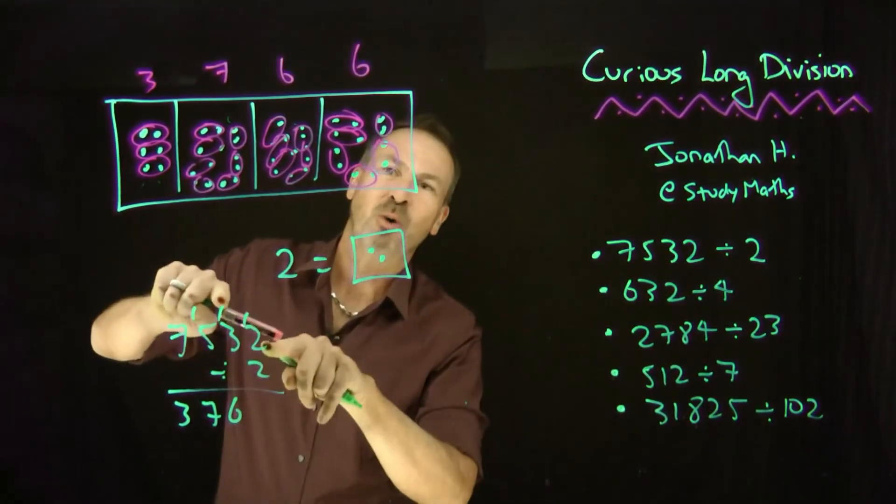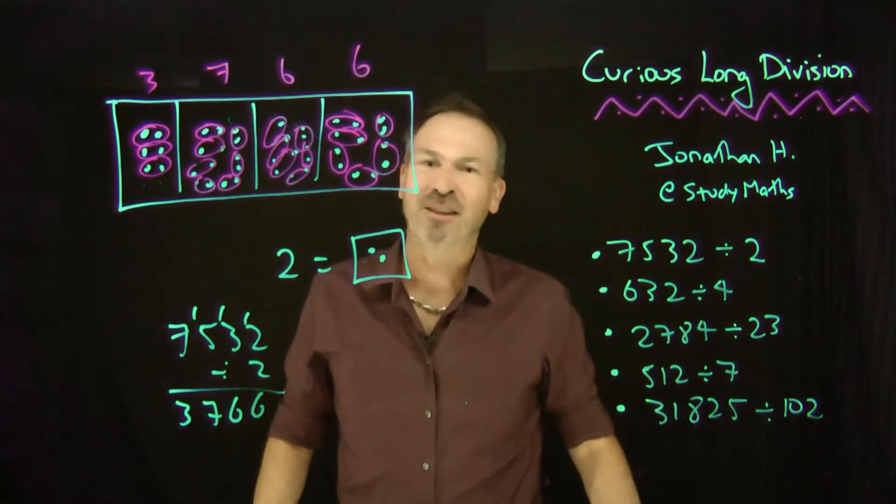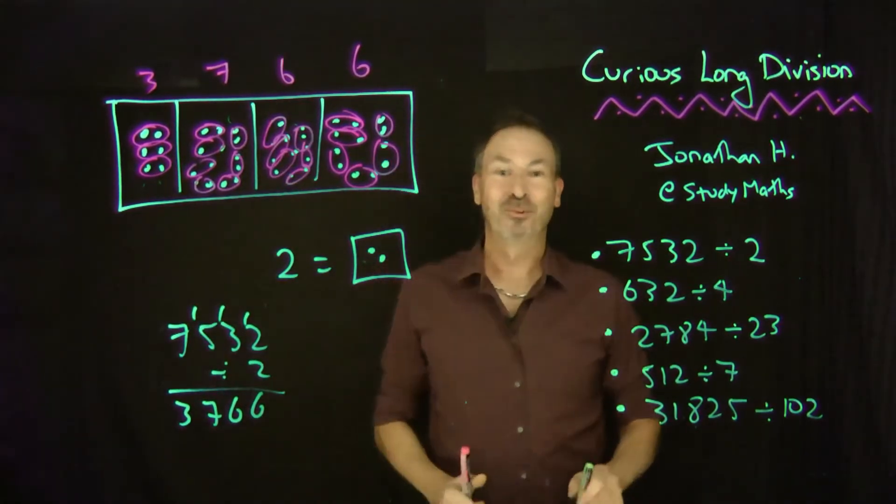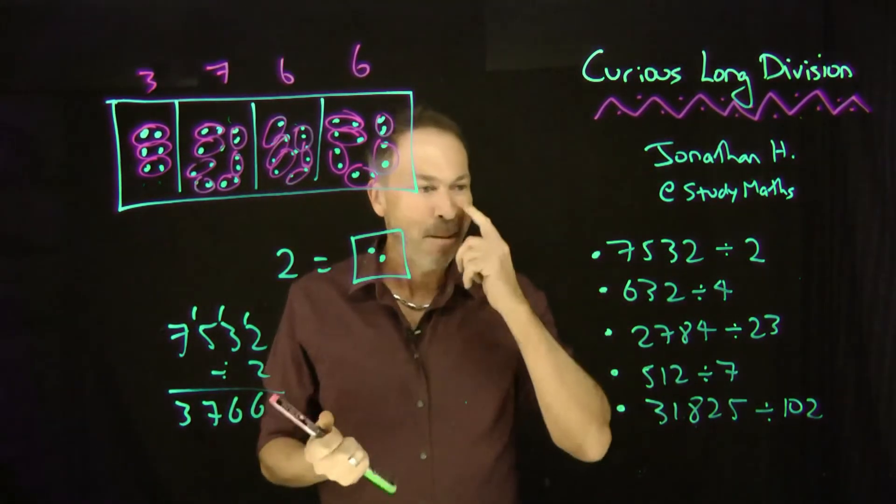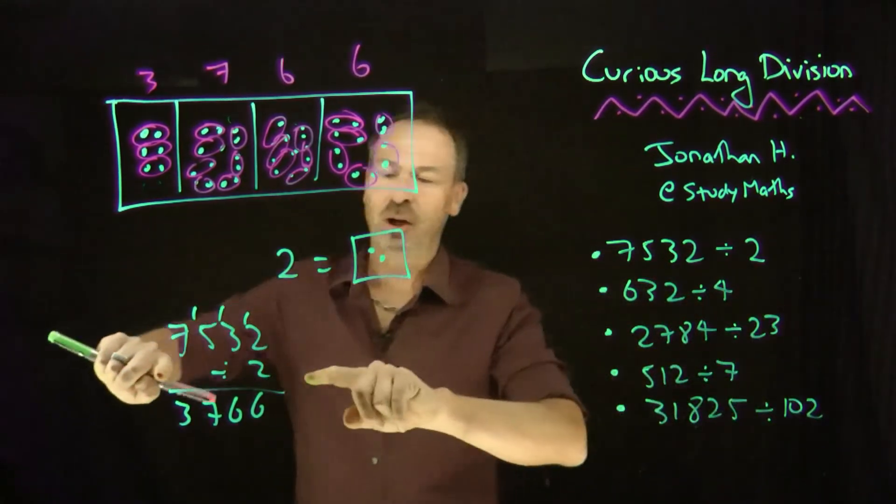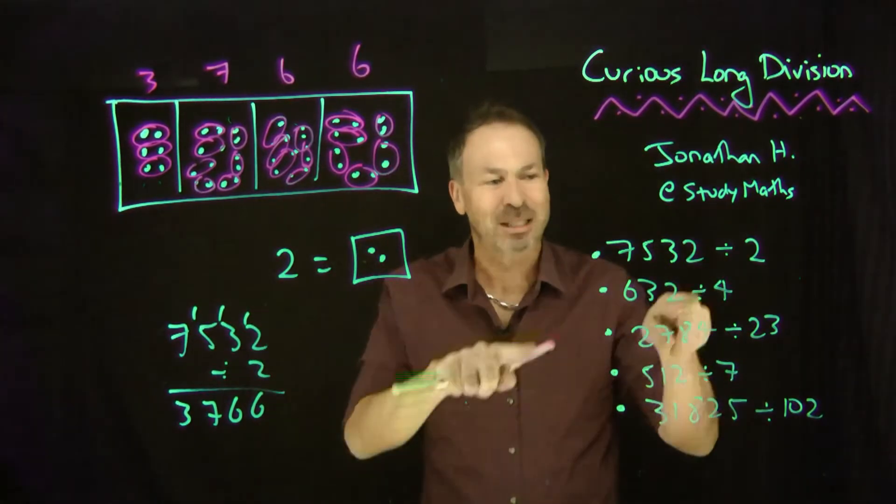And how many times does 2 go into 12? I just saw it physically. It goes 6 times. Yes. 7532 divided by 2 really is 3766. Grand. Great. All right. Why don't you practice drawing a picture for that one? See if you can really see how the curious algorithm and the dots and boxes method both go hand in hand to explain what's going on. Because let me move to the next one.